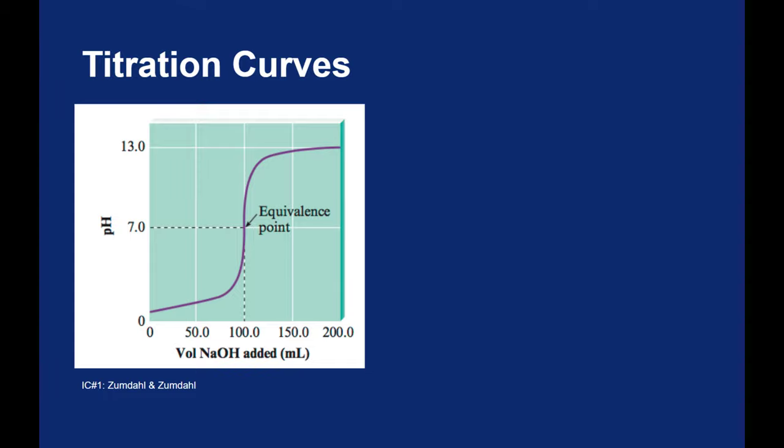This is a titration between a strong acid and a strong base. You are starting with the strong acid in your flask, and you are adding a strong base from your burette. I know this for several reasons. One, I am starting with a really low pH initially. That is the pH of what is in the flask. That indicates to me that I am starting with a strong acid.